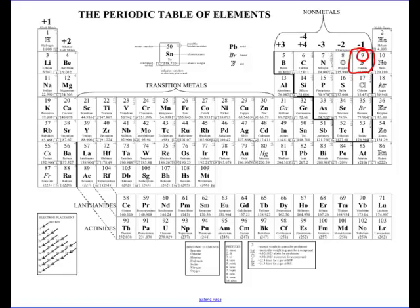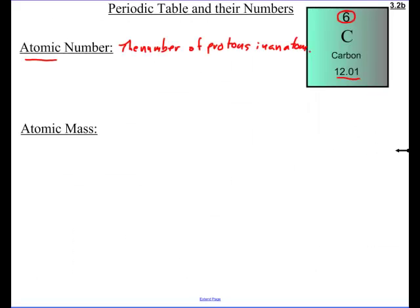Hey, now find iron. Pause the video if you need to. Maybe you found it. It's way over here, element 26. The symbol is Fe, and that's for the word ferrum, but it's still iron for us. So how many protons? 26. So it's pretty straightforward.